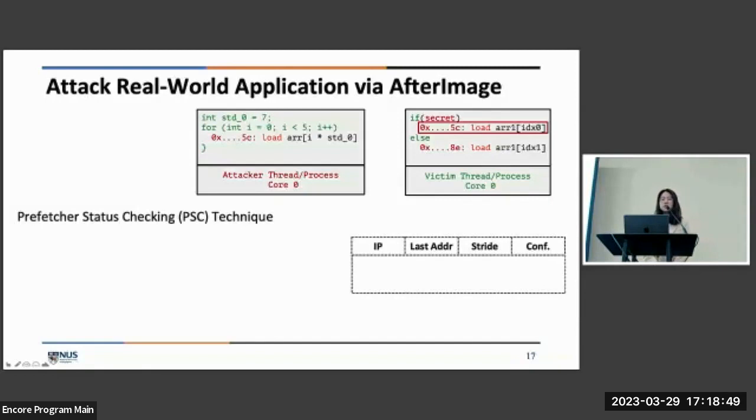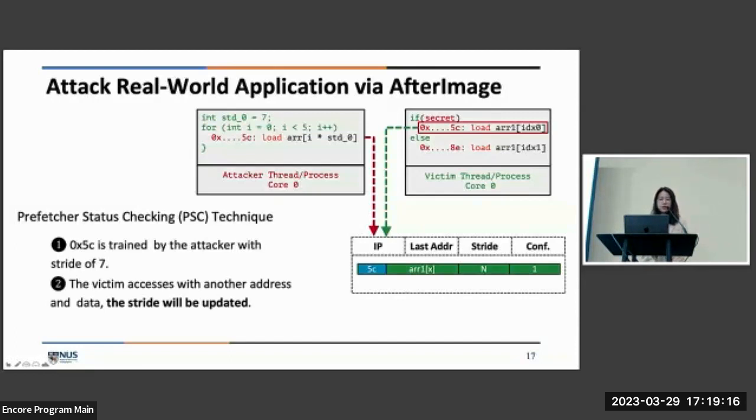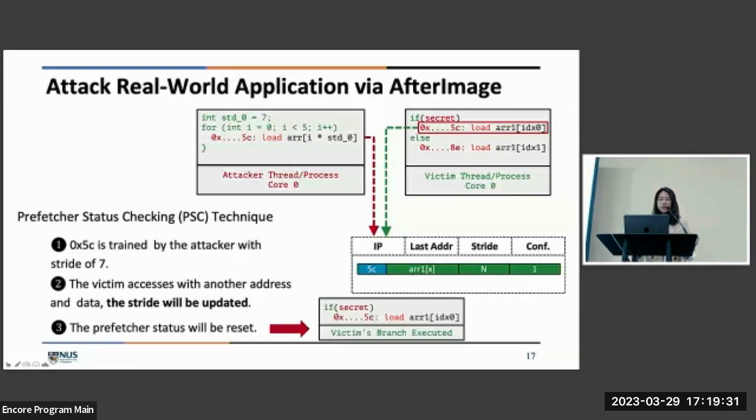Now, we want to take two steps further. First, we want to attack a real-world application. And second, we want to get rid of the cache primitives, which really makes this attack standalone. To do this, we propose a technique called prefetch status checking technique to extract the secret. Following the same process, the instruction 5C is trained by the attacker with a special stride of 7 and the victim touches the 5C load. What happens now is that the stride value is updated in the prefetcher and the confidence is reset. Therefore, the attacker will find that the prefetcher will no longer be triggerable. Therefore, it can infer the execution of the load and the victim's secret to be one.